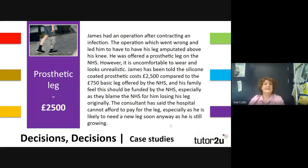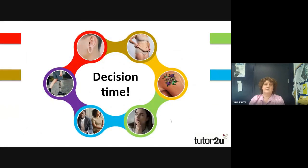Those are your six patients. You have to decide who you would spend money on and give a reason why. It's always best, with a budget of £6,000, to spend the whole budget. Pause the video when you're ready and go back to it to decide.